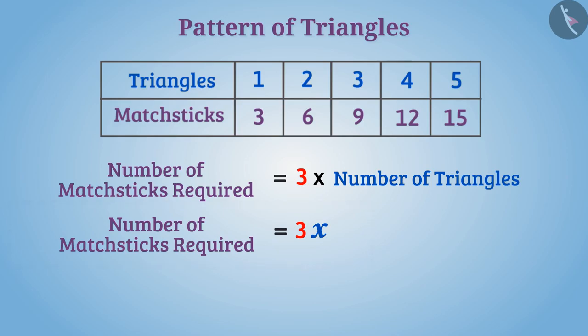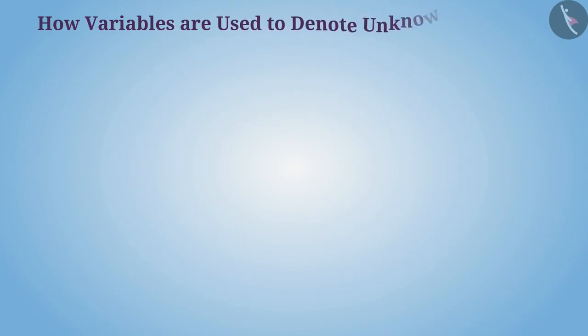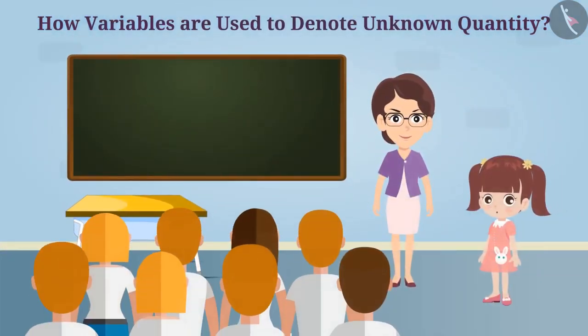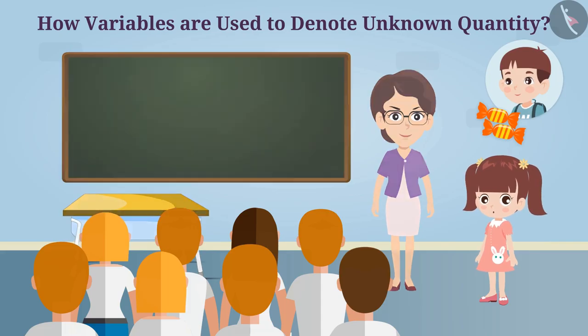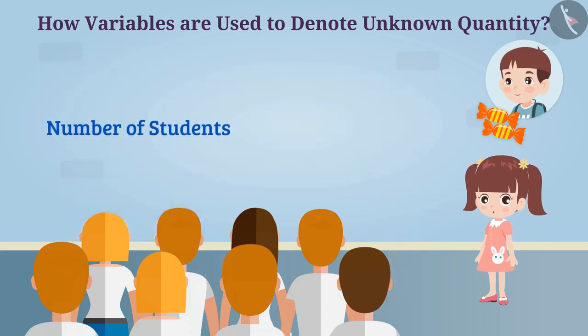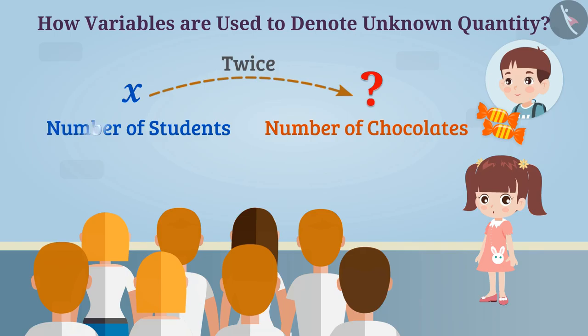Now let's understand how variables are used to denote unknown quantity. On her birthday, Madhu wants to distribute chocolates in the classroom. She wants to give two chocolates to every student. If the number of students are expressed by variable x, then what will be the required number of chocolates? Madhu must have chocolates twice the number of students. That means if the number of students will be x, then number of chocolates required will be 2x.